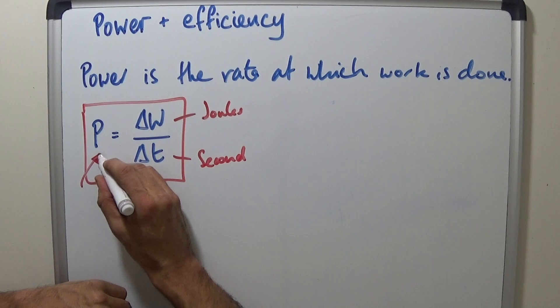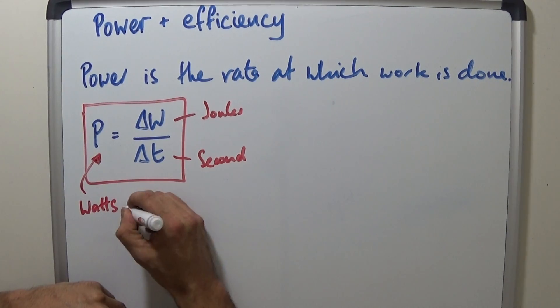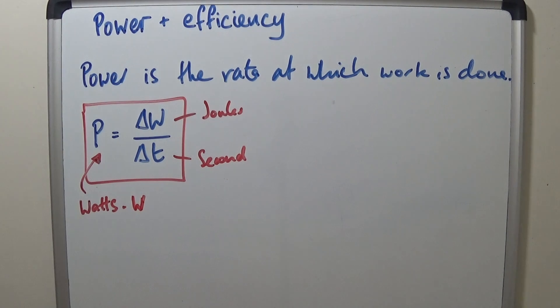And of course, the unit for power. What is the unit for power? That's what I like to ask. And it is Watts, symbol W. It's a capital W because it's named after someone.